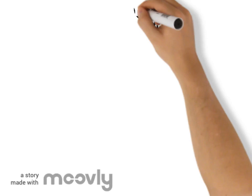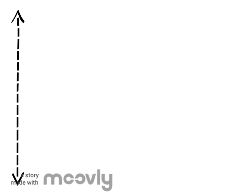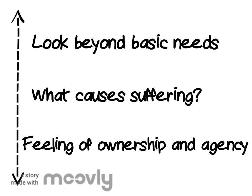Concept three: alleviate suffering. Aid workers like John need to alleviate the suffering of those in need. Whilst meeting basic needs is necessary, it is important to look beyond that. We should focus on what people find important, what causes their suffering, and ensure they have a feeling of ownership and agency.